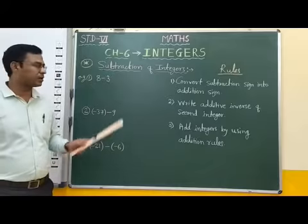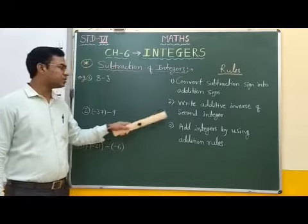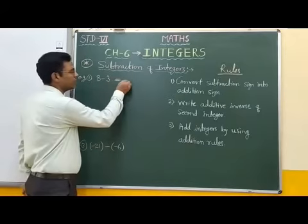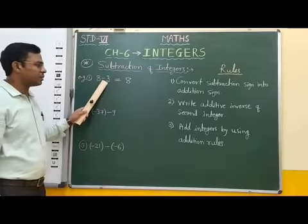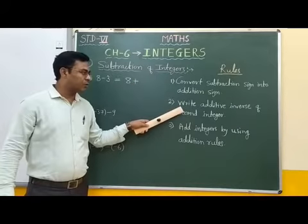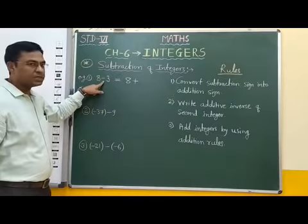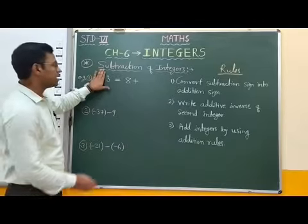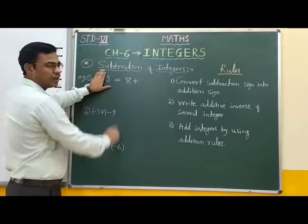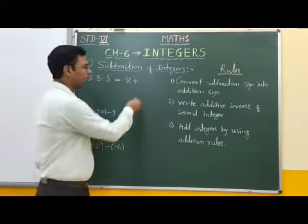Here we have to subtract 3 from 8. As per the rules, first we have to convert this subtraction sign into addition sign — so the first number stays as it is and the subtraction sign is converted into addition sign. Now, second rule: write the additive inverse of the second integer. The sign of the second integer is positive, so this is plus 3, and the additive inverse of plus 3 is minus 3. Therefore, here we write minus 3.